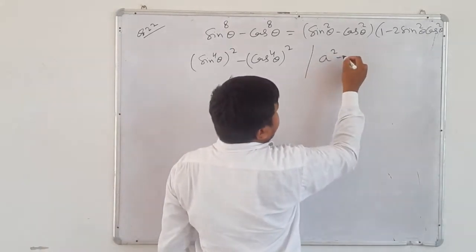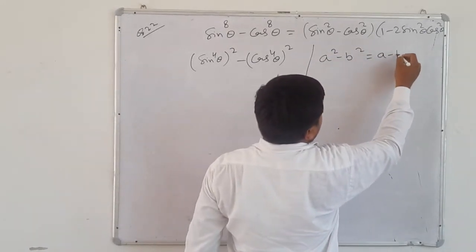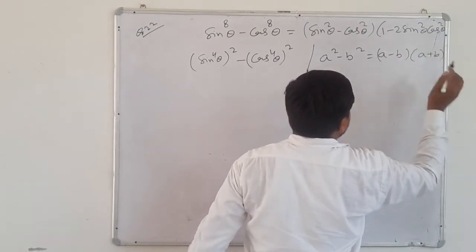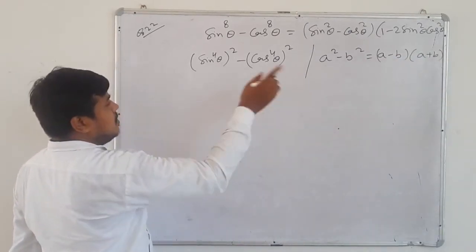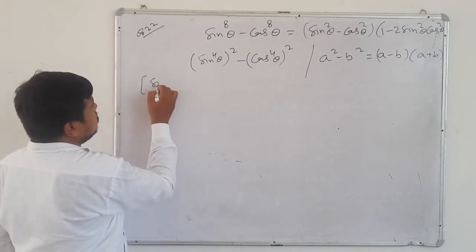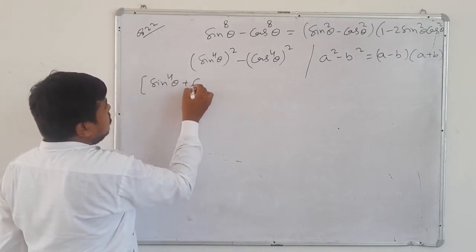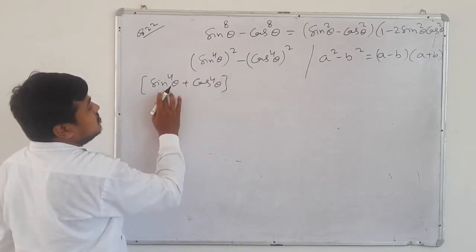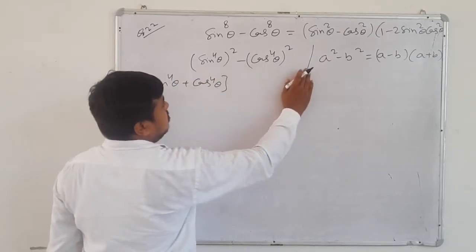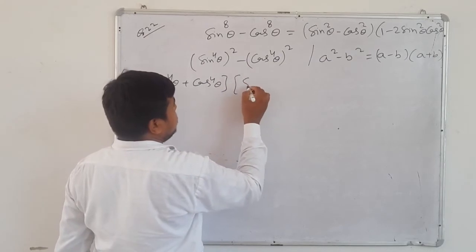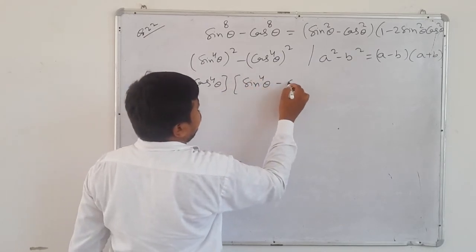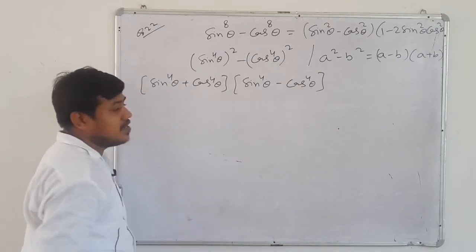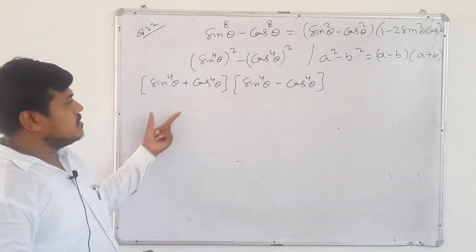Now observe the bracket: x² - y² form, i.e., a² - b². So apply the identity a² - b² = (a - b)(a + b). We get: (sin⁴θ + cos⁴θ)(sin⁴θ - cos⁴θ). Now sin⁴θ + cos⁴θ — you have proved this in question 12 as equal to 1 - 2sin²θcos²θ.